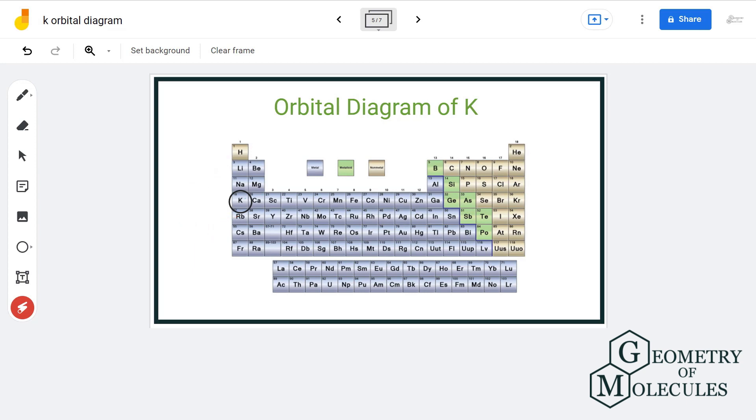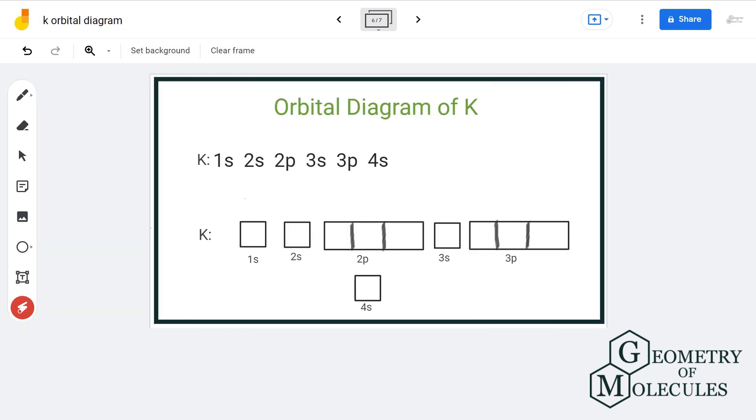Now that we know the number of electrons let us write its electronic configuration. It will be 1s2, 2s2, 2p6, 3s2, 3p6, 4s1. If we add up the numbers here you will get the value of 19.